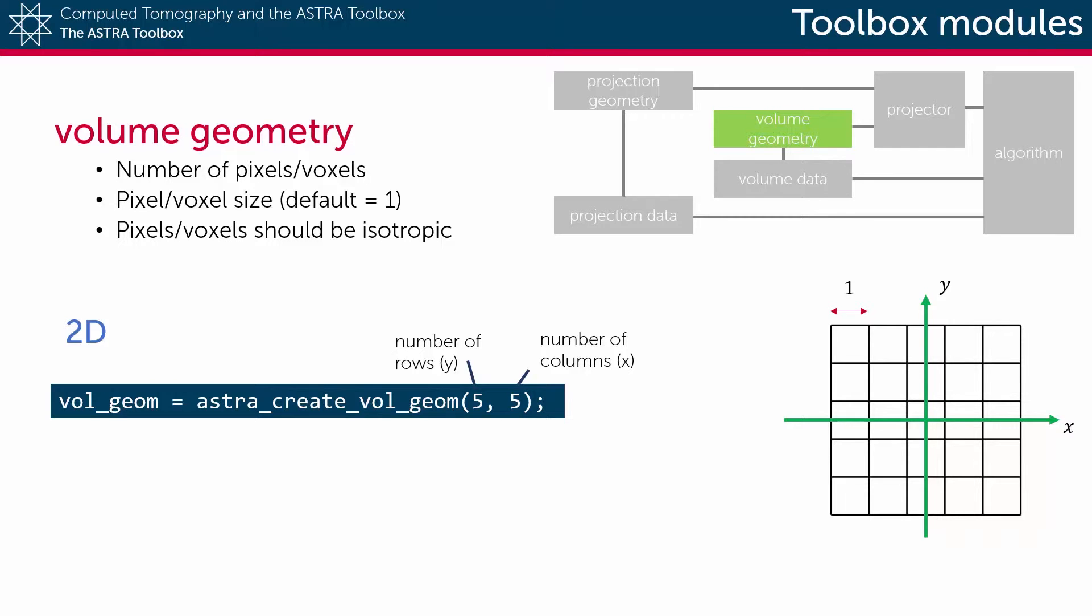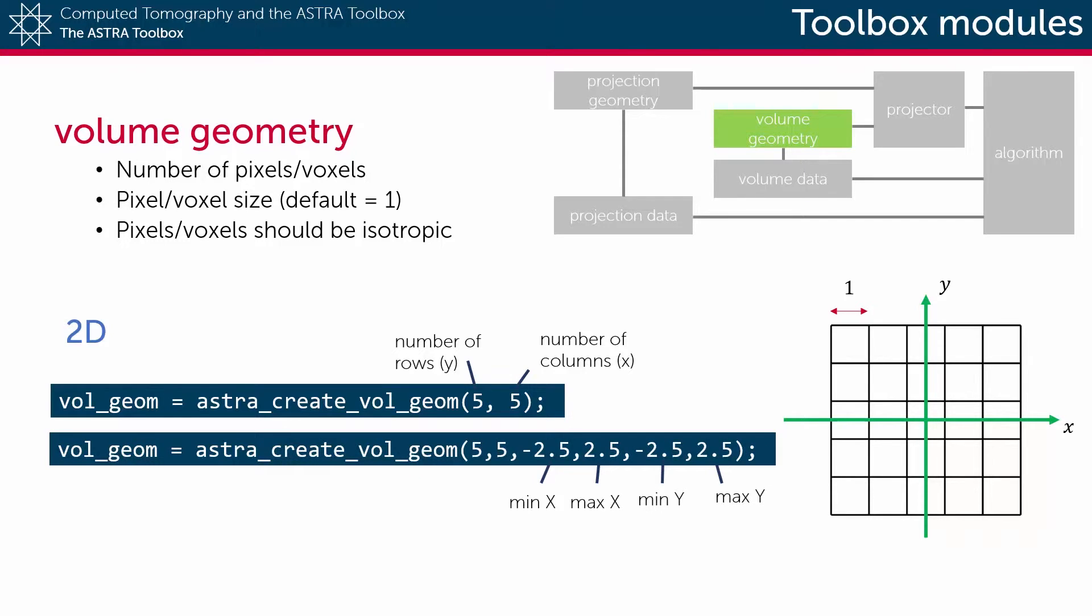By default, the size of each pixel is one unit, but this can be changed by specifying the minimum and maximum coordinates of the reconstruction window.